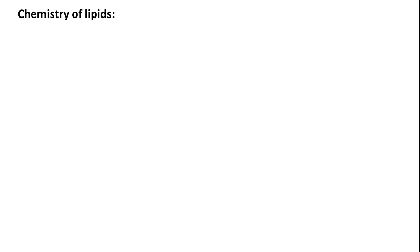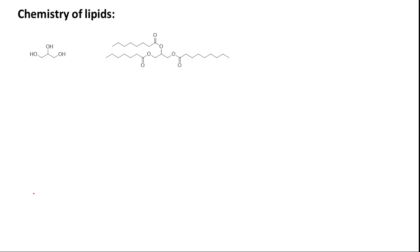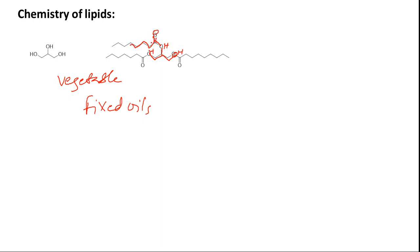Let us see in brief about the chemistry of lipids. When we hear about lipids, the first thing that comes to mind is vegetable oil. Vegetable oils, which we call fixed oils, contain triglycerides. This is the glycerol portion with three hydroxyl groups, and every one of those hydroxyl groups is esterified with three different fatty acids — these are fatty acid esters, which is what we call triglycerides.